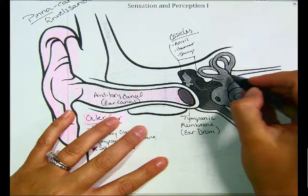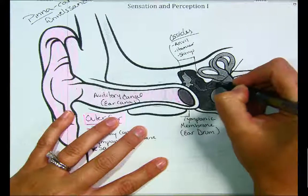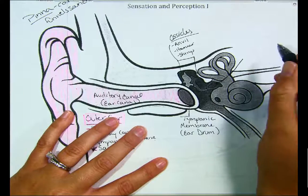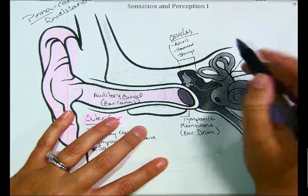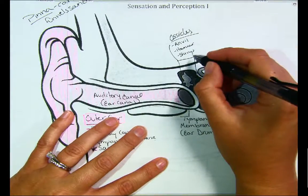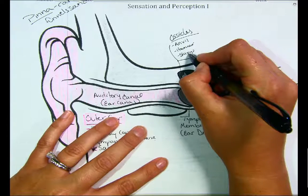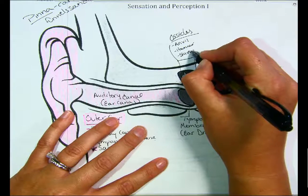We're going to draw an arrow to the stirrup — S-T-I-R-R-U-P — and label the hammer and anvil as well.